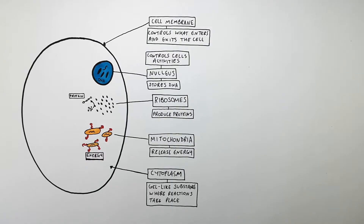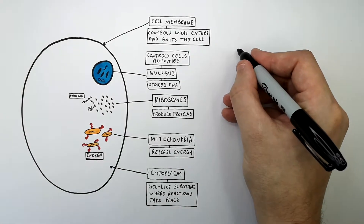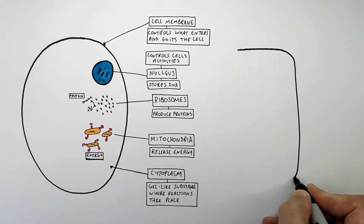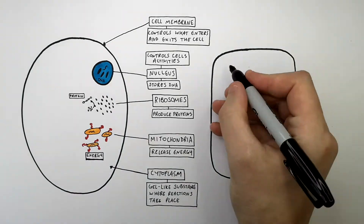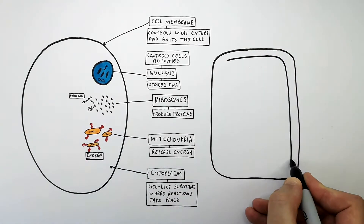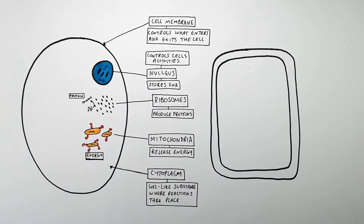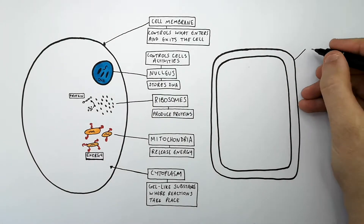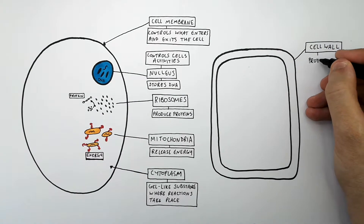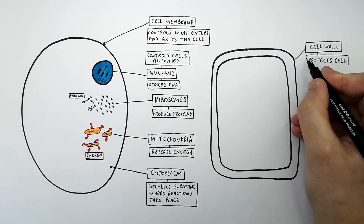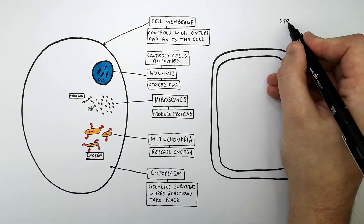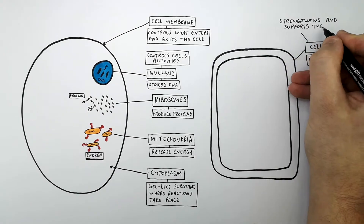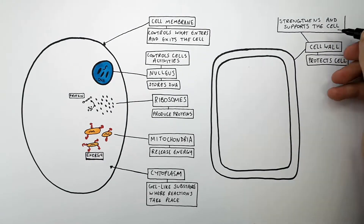So now we're going to look at a plant cell and describe the function of each of the plant cell's structures and organelles. This here is the cell wall of the plant cell, and this here is the cell membrane of the plant cell. The cell wall protects the cell, and the cell wall strengthens and supports the cell.